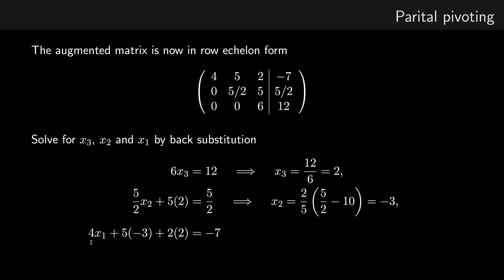And finally, the top row is 4x1 plus 5 times x2, which we know is minus 3, plus 2 times x3, which we know to be 2. And that equals minus 7. And again, we can rearrange to make x1 the subject given a solution of 1.